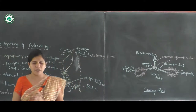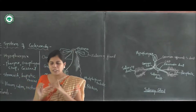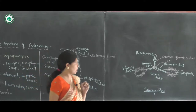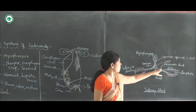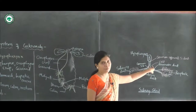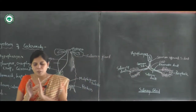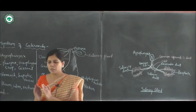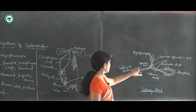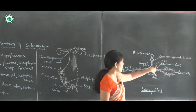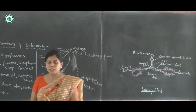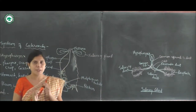The receptacle of each gland is a thin-walled, elongated, sac-like structure. Each receptacle has a duct, and these ducts unite to form a common reservoir duct. The common salivary duct and the common reservoir duct unite together to form a common efferent salivary duct, which opens at the base of the hypopharynx.